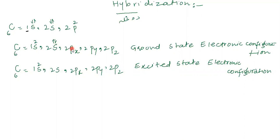Rule number 1: there will not be 2 electrons in any orbital unless paired. Rule number 2: these 2 electrons come into an orbital with opposite spin. In 2S, one arrow is upward and the other is downward — meaning one electron spins clockwise and the other spins anti-clockwise.